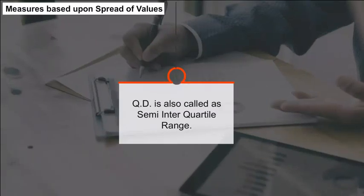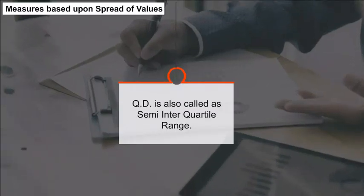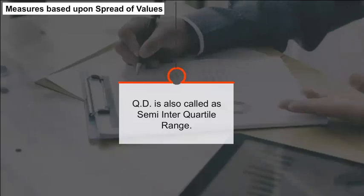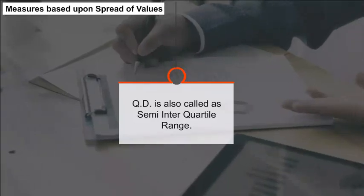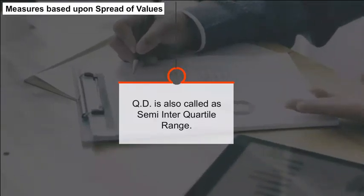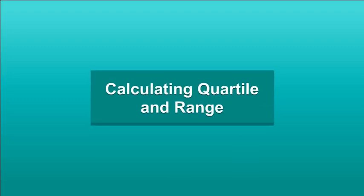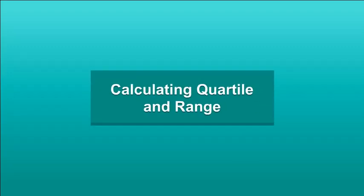Interquartile range is based upon the middle 50% of the values in a distribution. Half of the interquartile range is called quartile deviation (QD). Thus, QD is also called the semi-interquartile range.